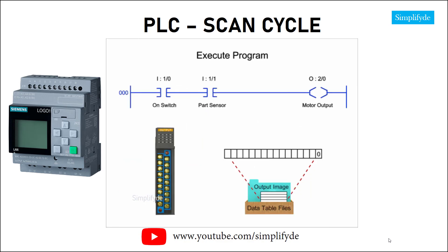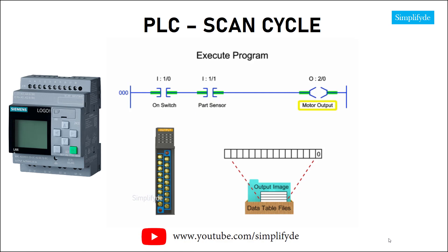In the next step of the scan cycle, the PLC executes the program one instruction at a time. The values of the output table are changed based on the status of the inputs.